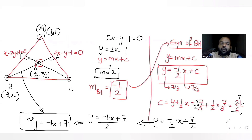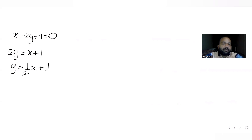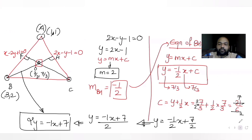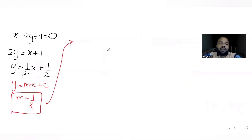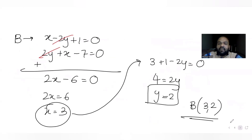To find vertex C, I find the equation of altitude CF. The line x - 2y + 1 = 0 gives 2y = x + 1, so y = ½x + ½, meaning slope = ½. Since CF is perpendicular to this line, the slope of CF is the negative reciprocal of ½, which is -2.